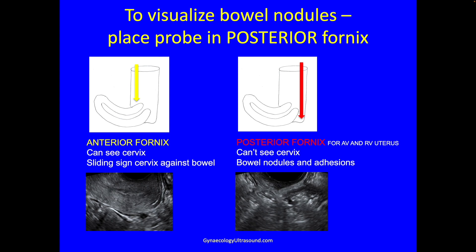To look at bowel nodules you really need to go through the posterior fornix, because this is where you'll be closer to bowel — this is bowel here — and you will be able to see nodules and adhesions if they're there, if you look carefully.